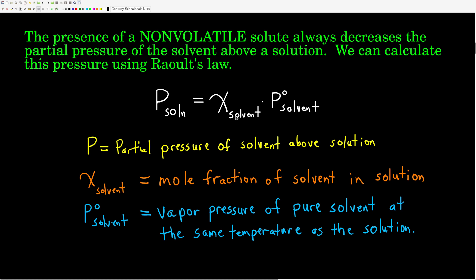Now, watch out — this mole fraction is for the solvent, not the solute. The mole fraction of the solvent is the moles of the solvent divided by the total moles in the solution, where the denominator is the moles of the solvent plus the moles of everything else in that solution. So this is Raoult's Law.